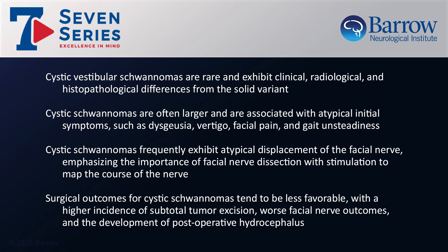In conclusion, cystic vestibular schwannomas are a rare subtype that exhibit clinical, radiological, and histopathological differences from the solid variant. Unique features of cystic schwannomas include larger size and atypical initial symptoms such as dysacusia, vertigo, facial pain, and gait unsteadiness. Cystic schwannomas frequently exhibit atypical displacement of the facial nerve, emphasizing the importance of facial nerve dissection with stimulation to map the course of the nerve. Surgical outcomes for cystic schwannomas tend to be less favorable with a higher incidence of subtotal tumor excision, worse facial nerve outcomes, and postoperative hydrocephalus.